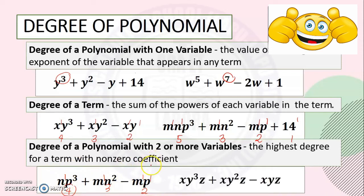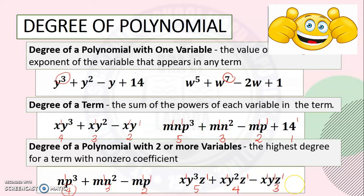Next example: xy cubed z plus xy squared z minus xyz. The degree of the first term is 1 plus 3 plus 1 equals 5. The second term: 1 plus 2 plus 1 equals 4. The third term: 1 plus 1 plus 1 equals 3. The highest degree is 5, so the degree of this polynomial is 5.